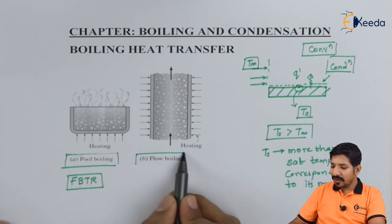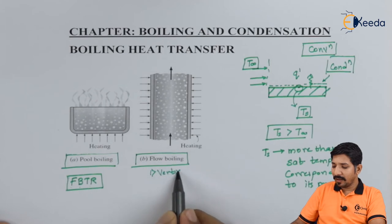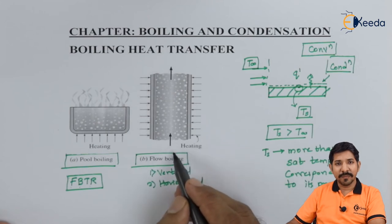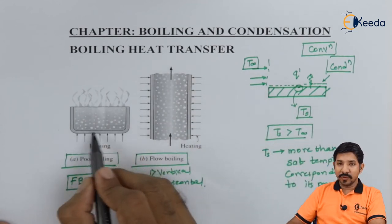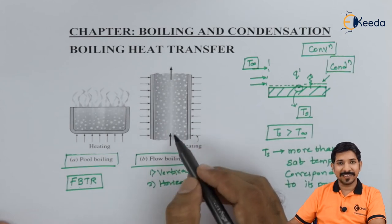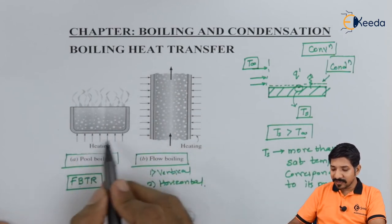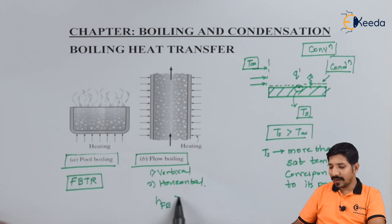The second type is flow boiling, where the instrument can be kept vertical or horizontal. Here an external agent such as a pump or blower is used to drive fluid flow. The fluid motion is driven by both buoyant force and the external agent, and bubble formation depends on the velocity factor too. The heat transfer coefficient in flow boiling is therefore quite higher than in pool boiling.